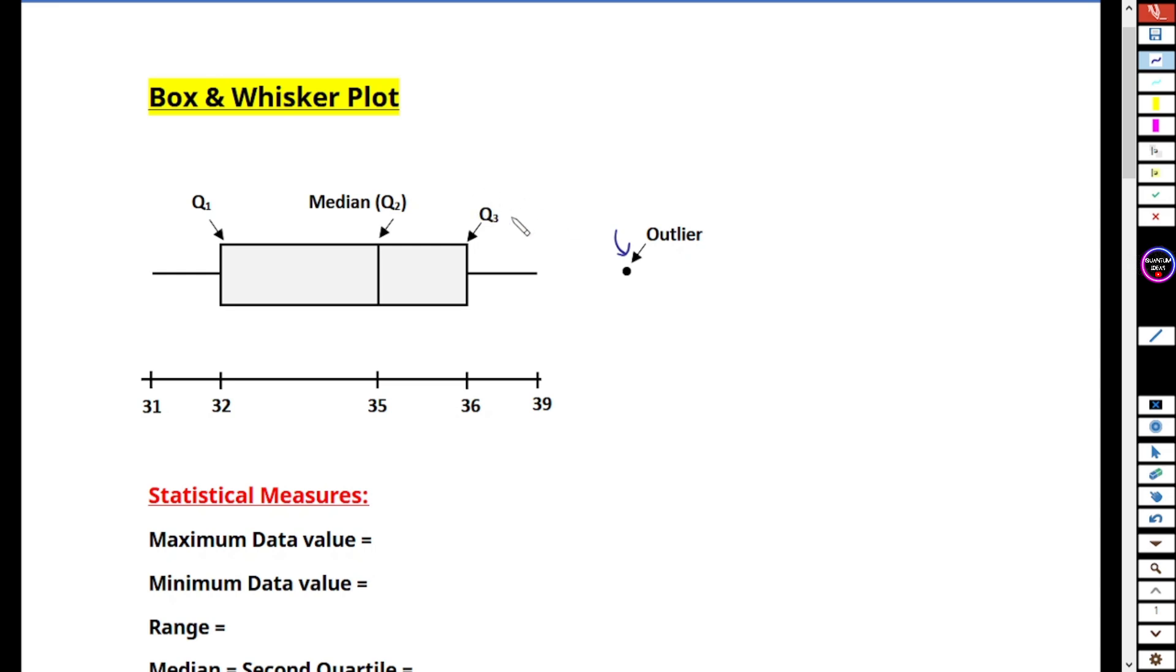In box and whisker plots, you can see the outliers, but we don't that much acknowledge or use outliers in our calculations. Let's get started and see the different parts of box and whisker plot. You can see here a rectangular box, so basically that is the box.